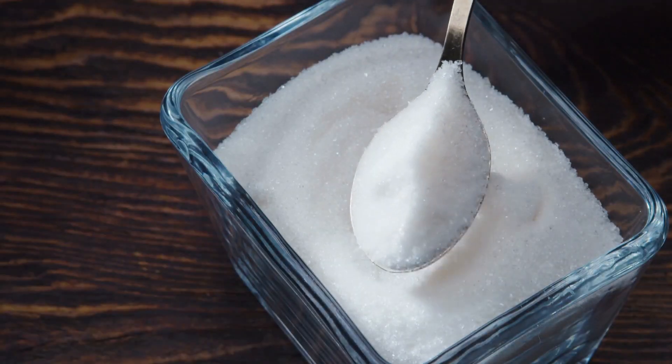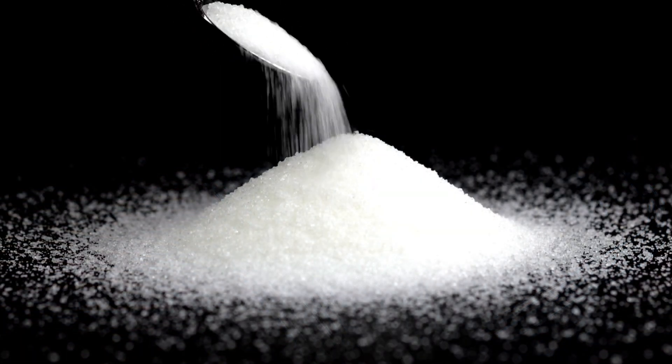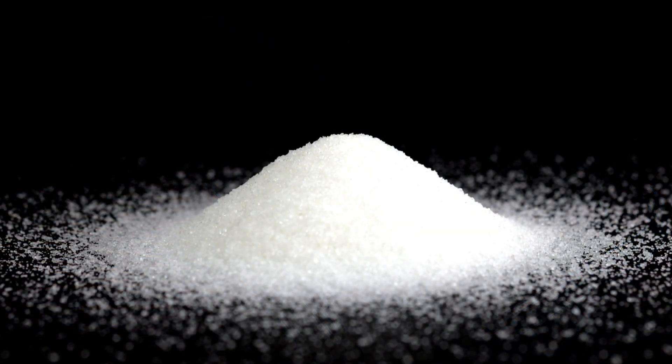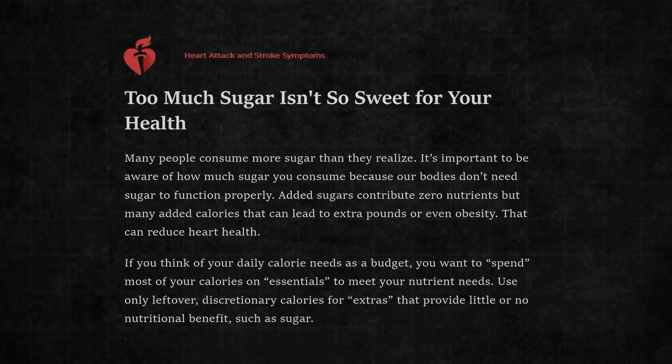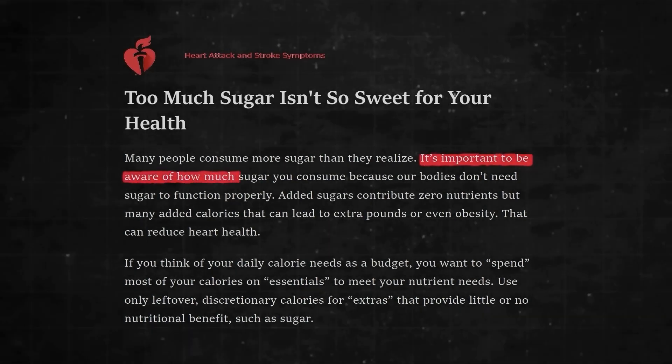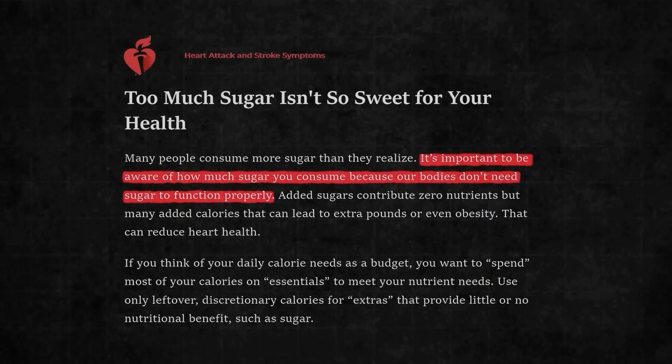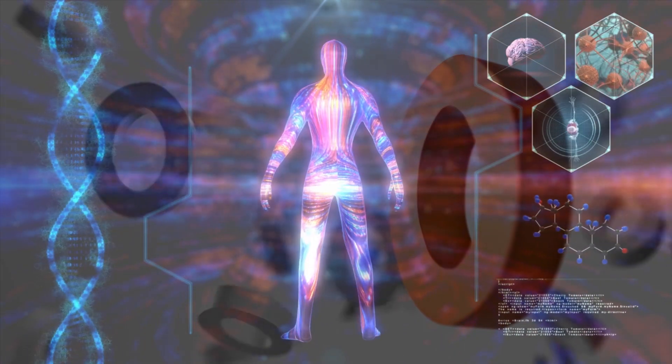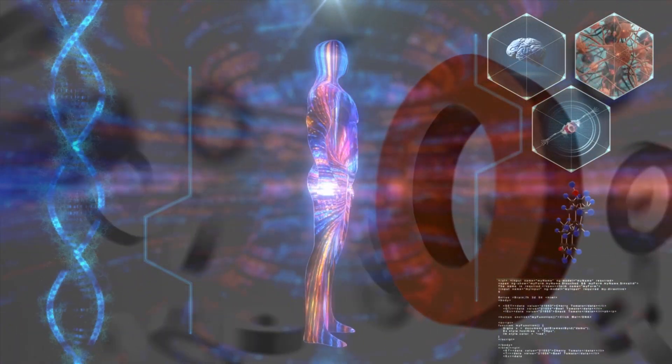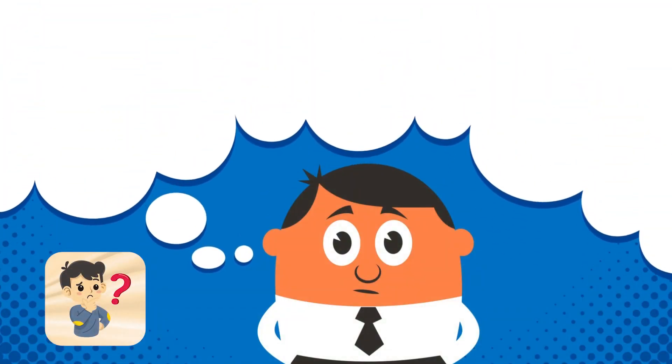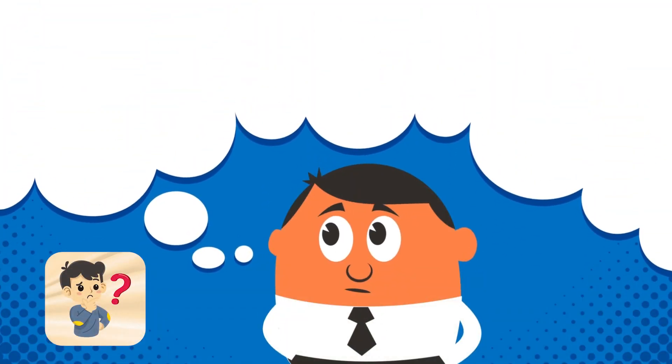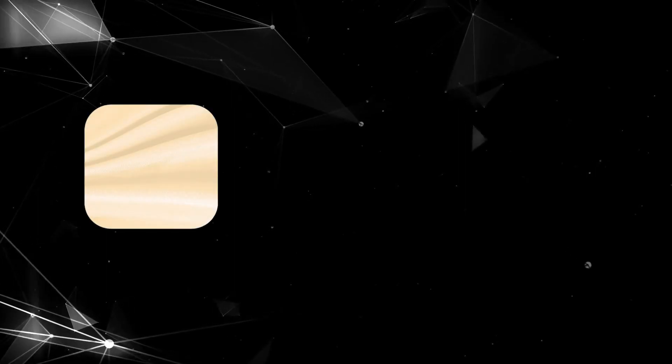On the other hand, added sugars are the sugars we intentionally add to our food, like the extra sugar we put in while cooking or preparing meals. According to the American Heart Association, our bodies don't actually need any added sugar to function properly. So, the ideal amount of added sugar our bodies require is zero. But you might wonder, what's the safe limit for added sugar consumption?